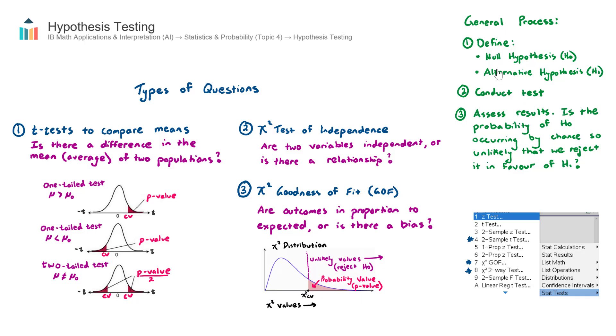Always work your way through these steps: define the null hypothesis, conduct the test, and then assess the results. Is the probability of null hypothesis so small that we reject it?